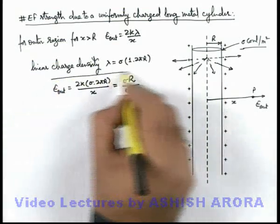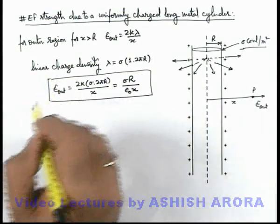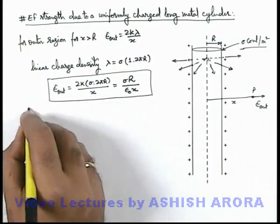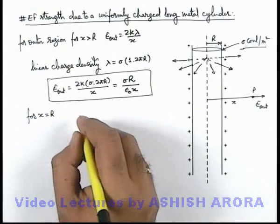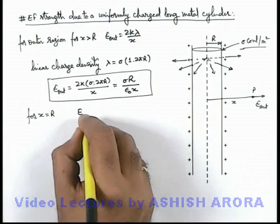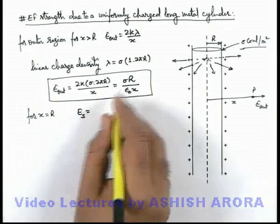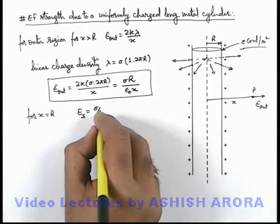Now in this situation if we substitute the value of x equal to R that is, for the surface of the cylinder here we can see that electric field on the surface of this metal cylinder can be given as sigma by epsilon not.